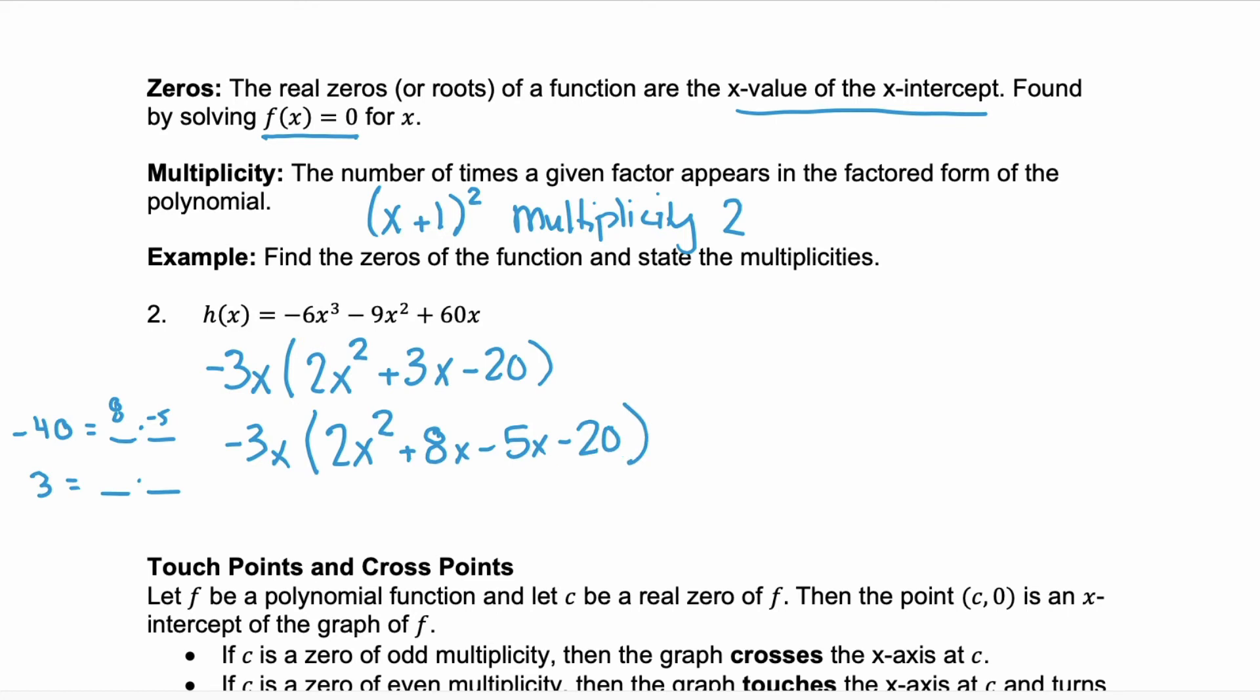Now, we have four terms, so we can group and factor. So, keep that GCF. Our first group of terms, they have 2x in common, and that leaves behind (x + 4). And we can factor out negative 5 from the second 2, and we have (x + 4). Now, we look at those groups, and we end up with a final factored form of -3x(x + 4)(2x - 5).